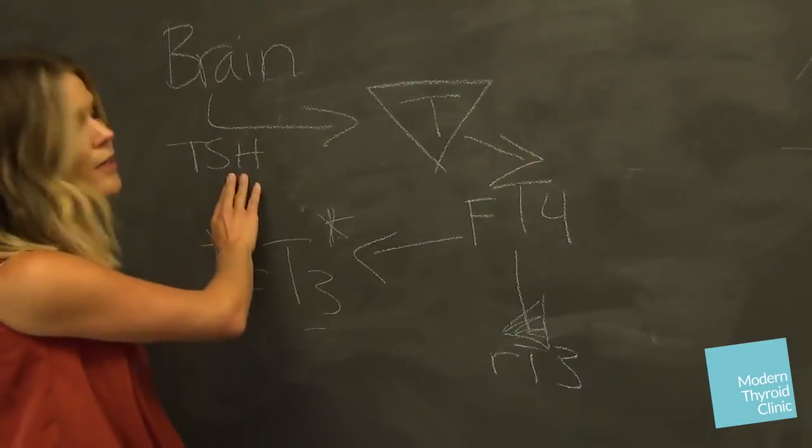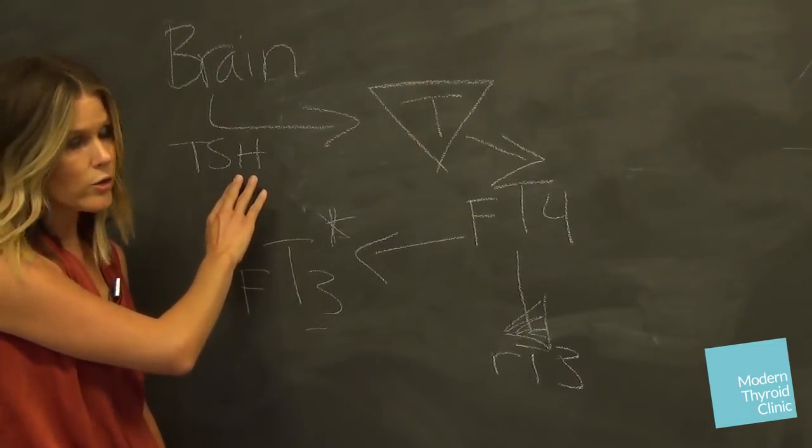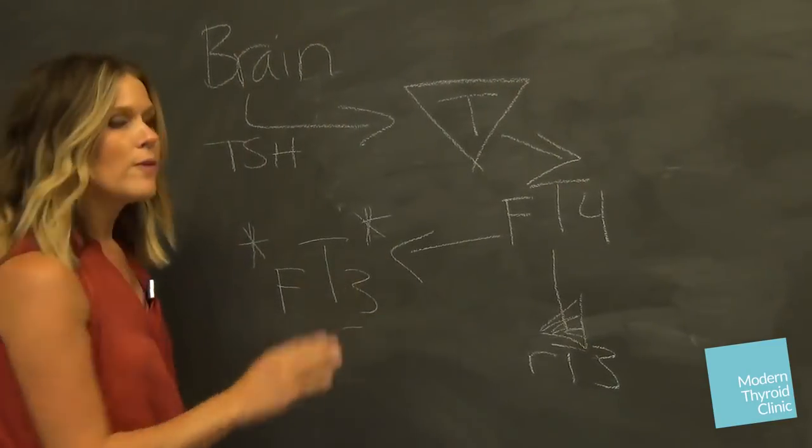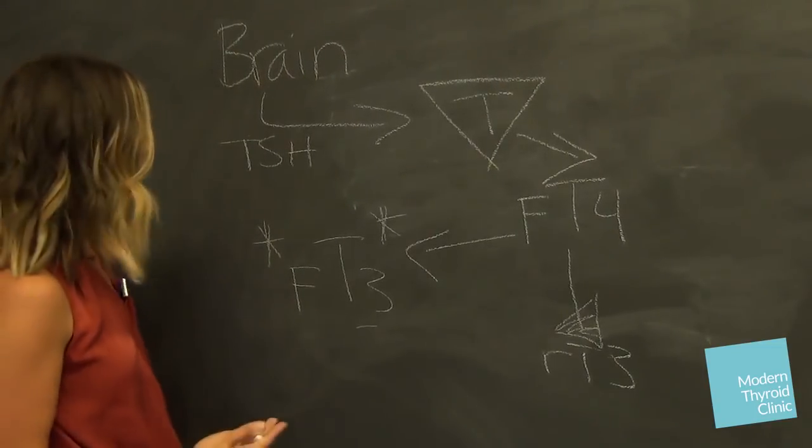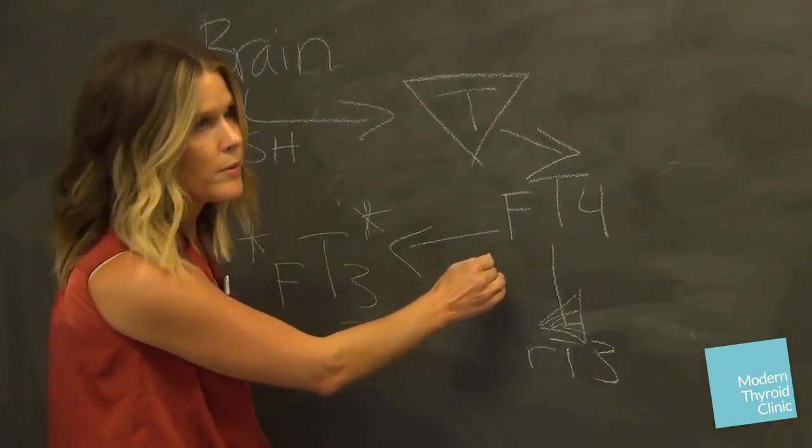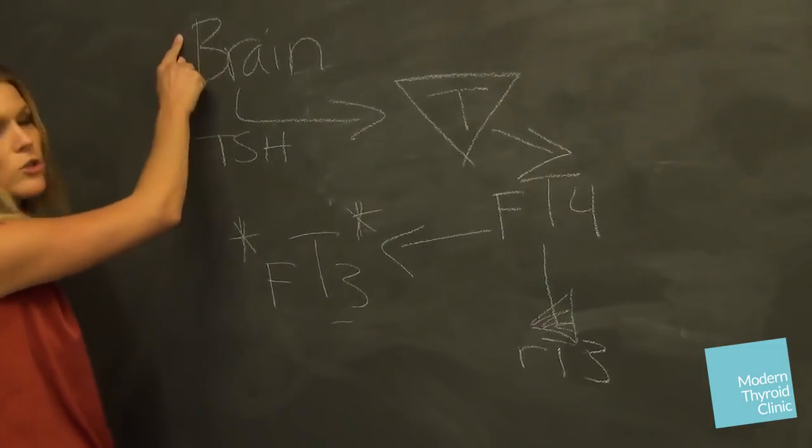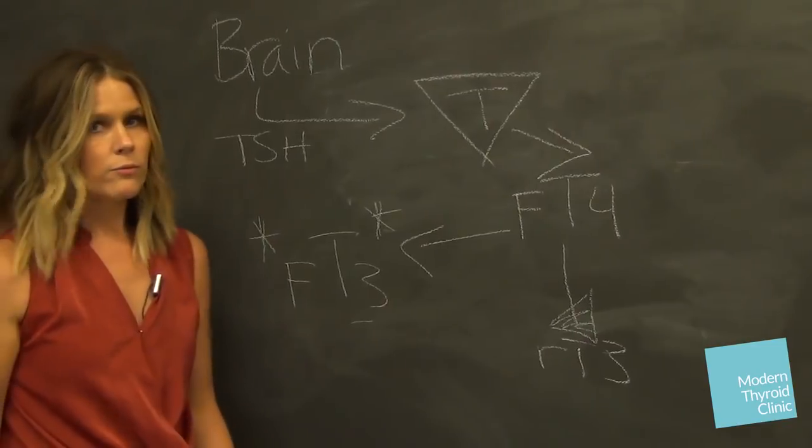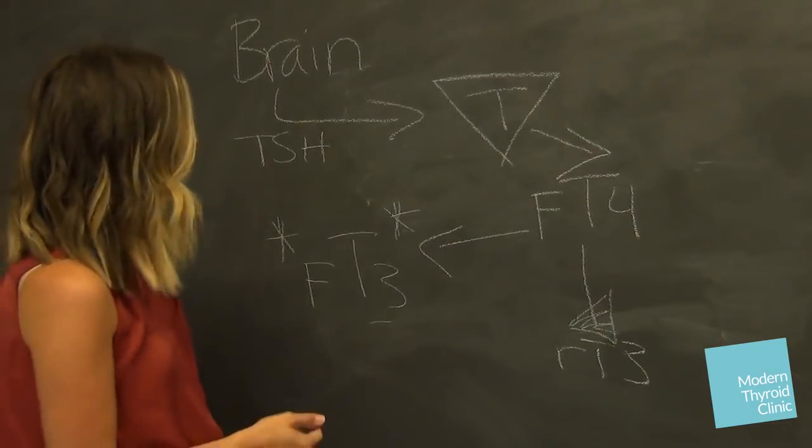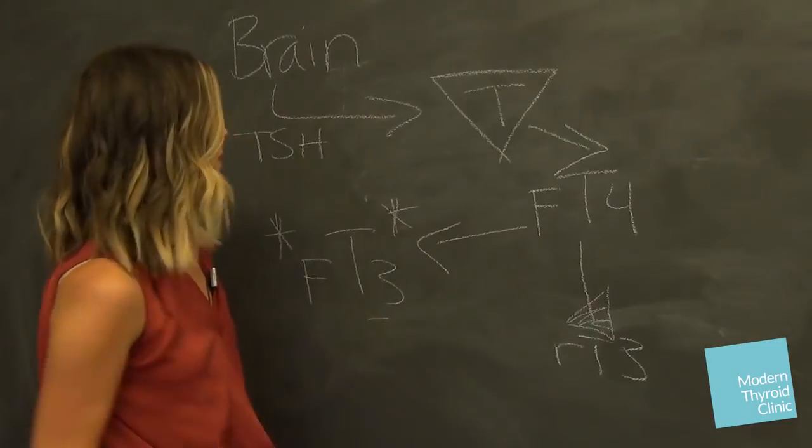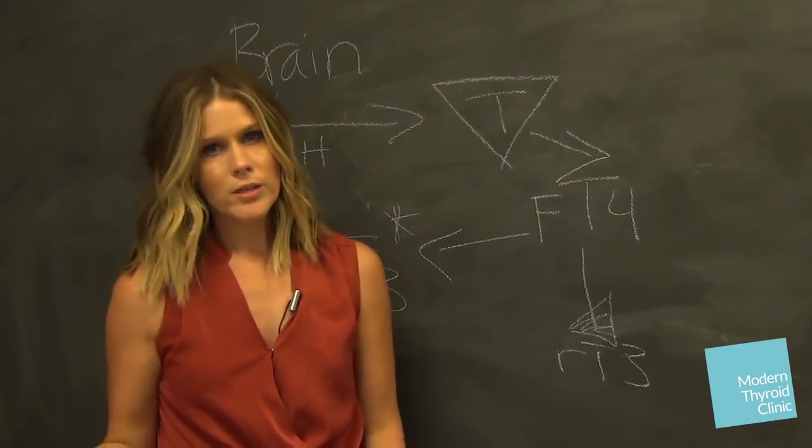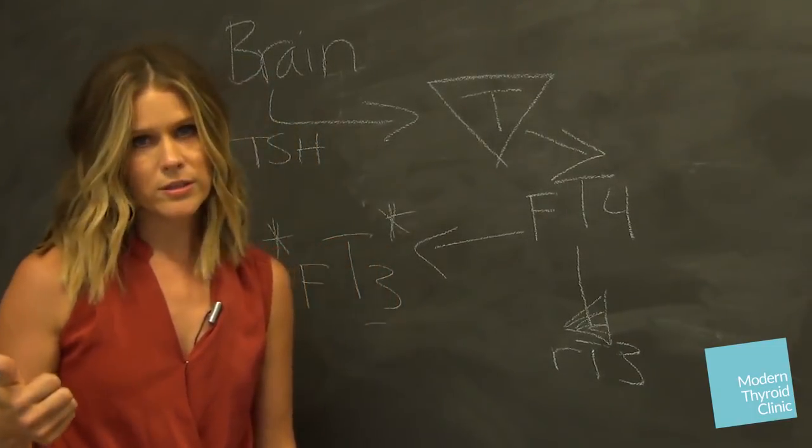If your doctor is basing your thyroid status on your TSH, what he or she is doing is assuming that your biochemistry feedback mechanism is intact. And what I mean by that is when you have enough supposedly of both hormones, both being the key word, it sends a message back to your brain and it says, okay, we have plenty of hormones. You can lower this person's TSH. We don't need to work so hard.